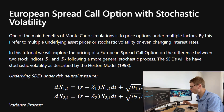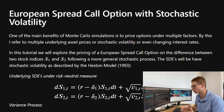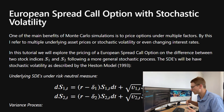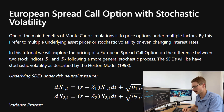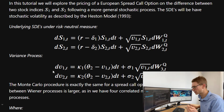Let's go through this Jupyter notebook. One of the many benefits of the Monte Carlo simulation process is that we can actually price under multiple different factors — multiple underlying asset prices, stochastic volatility, and even changes in interest rates. In this tutorial we're going to be exploring the pricing of a European spread call option on the difference between two stock indices: the Nasdaq and the S&P 500. We're going to be looking at a more general stochastic process where the SDEs will have stochastic volatility as described by the Heston model developed in 1993.